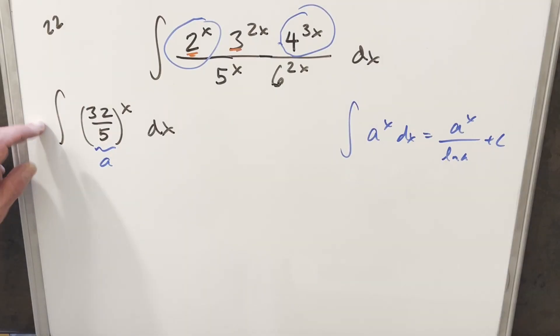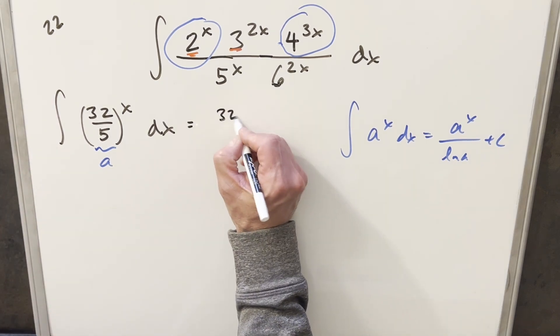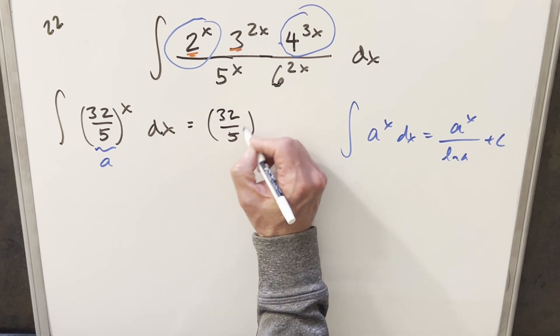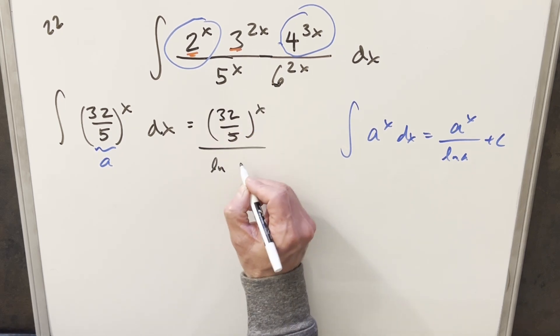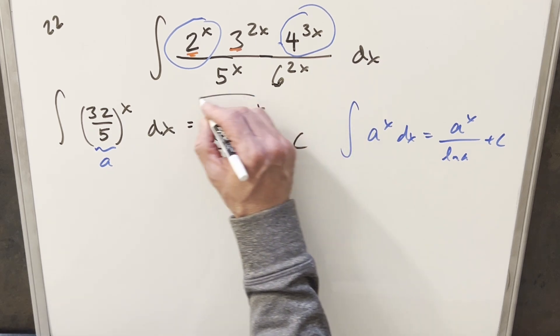So now coming back to our integral using the formula we just found, our a value is going to be just 32 over 5. So what we're going to have over here for our solution is just going to be 32 over 5 to the x over natural log 32 over 5. Add a plus c and that's it.